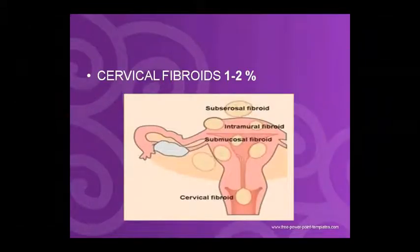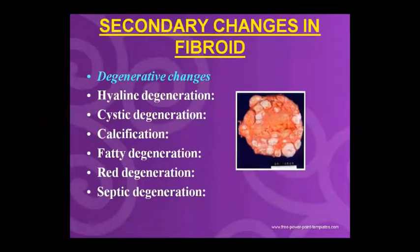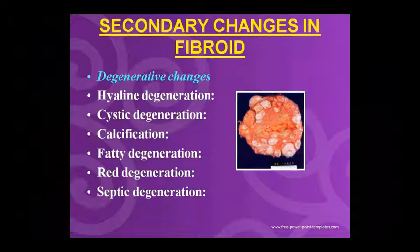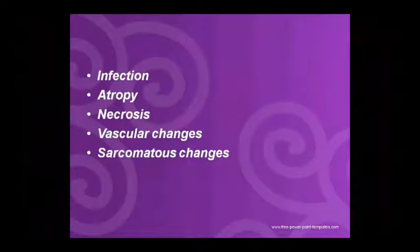Cervical fibroid can also occur in two cases. Secondary changes include degenerative changes: hyaline degeneration, cystic degeneration, calcification, fatty degeneration, red degeneration, and septic degeneration — these changes are linked to uterine fibroid.